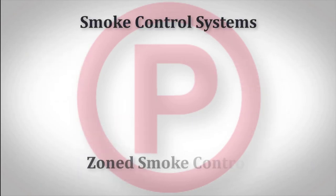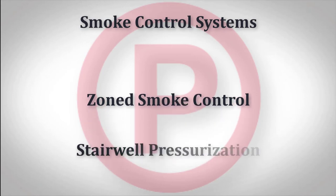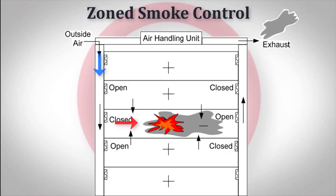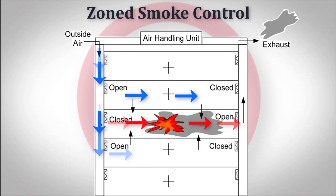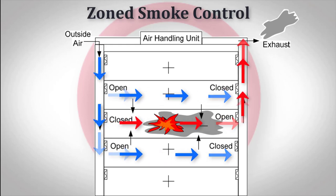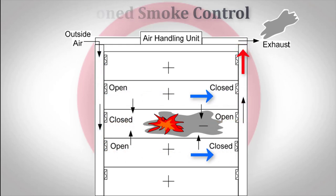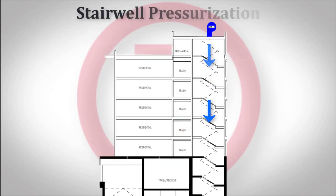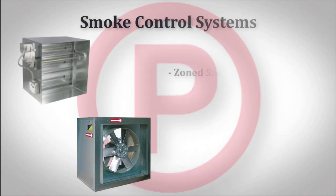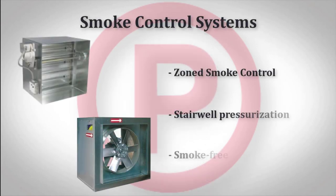Two of the most common configurations you will see are zone smoke control and stairwell pressurization. Zone smoke control is accomplished by exhausting smoke from the fire floor. The floors above and below the fire floor are then pressurized to prevent smoke migration to those areas. Stairwell pressurization is accomplished by simply pressurizing the stairwell to prevent smoke from entering it. The purpose of either configuration is to provide a smoke-free evacuation path during a fire.